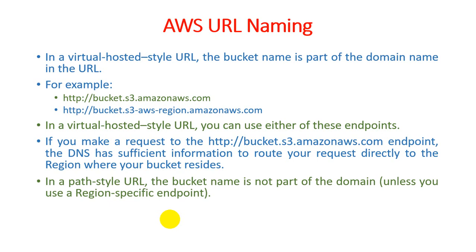In a path-style URL, the bucket name is not part of the domain. That is the key difference between virtual-hosted-style and path-style, unless you use region-specific endpoints. For path-style, you don't require the bucket name in the domain — you just specify the region, and it provides all the services defined by that nearest region.